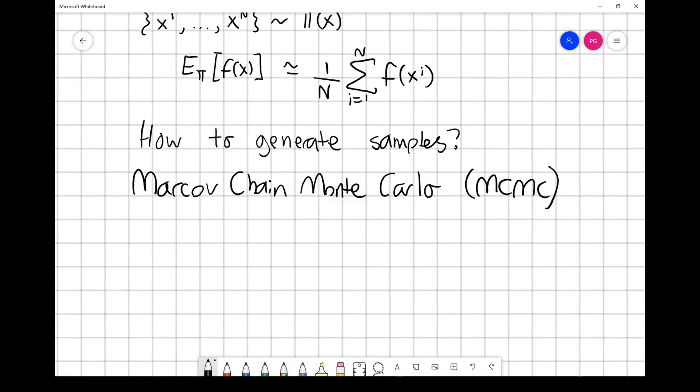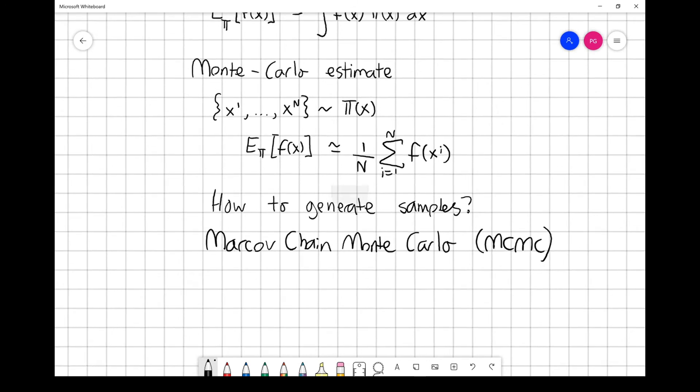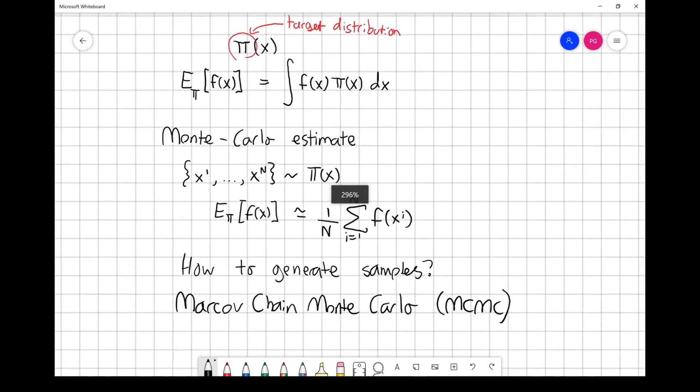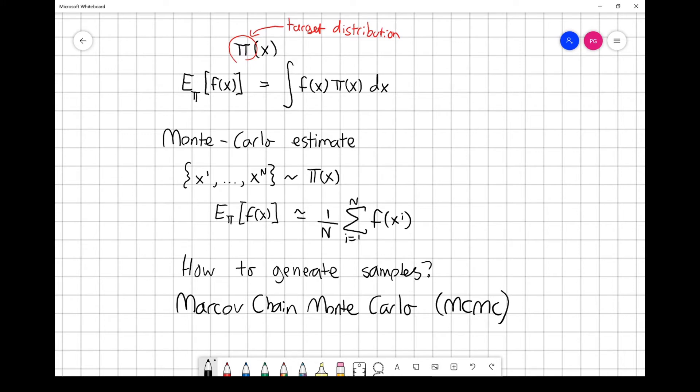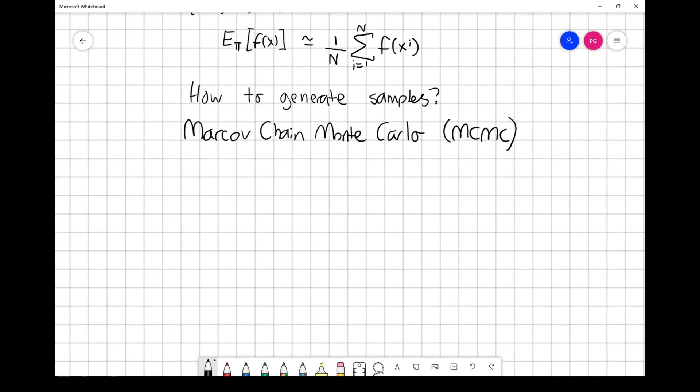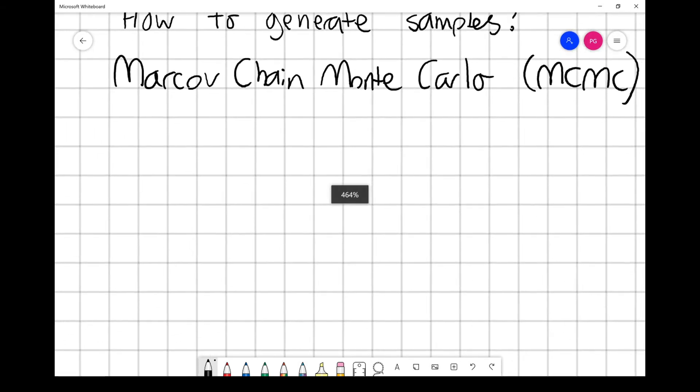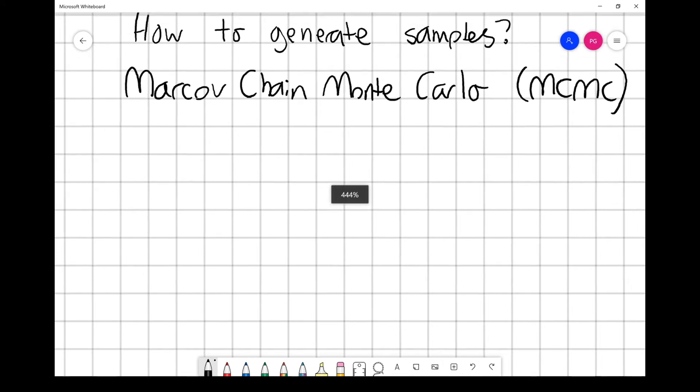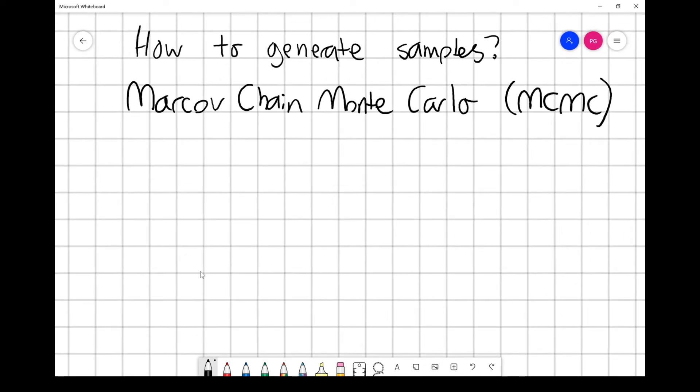When do we have to do this? We've got this target distribution π, we want to estimate something related to it, and we're going to generate samples for that purpose. Most of the time this comes up when we're doing something Bayesian, something that involves writing down Bayes' theorem.